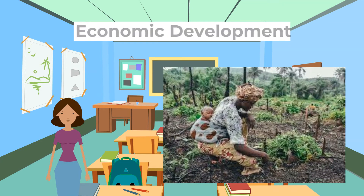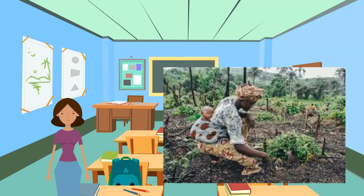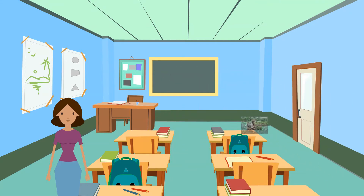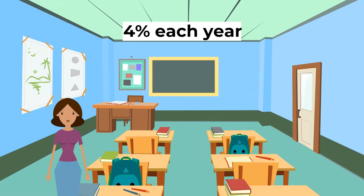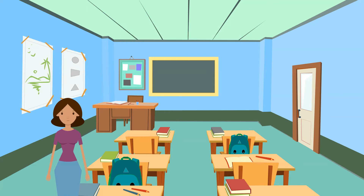Looking at economic development, 80 percent of the population relies on agriculture for employment and food supplies. Unfortunately, agriculture is negatively impacted by climate change — irregular rainfall and intense heat waves often cause major disruption and devastate crops. The economy has grown in recent years with an average growth of four percent each year. However, the high corruption rate limits international investment, so business is mainly small scale and local rather than large international businesses that can support more development.